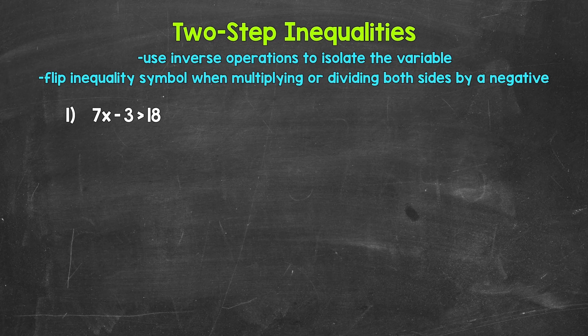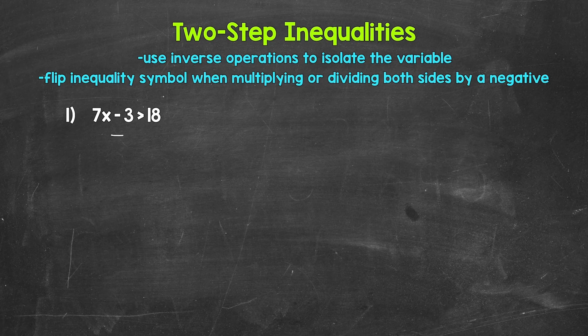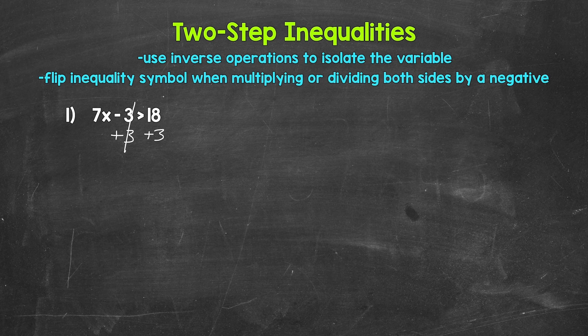Let's jump into number one, where we have 7x minus 3 is greater than 18. Just like with a two-step equation, we want to undo the subtraction first. We go in the reverse order of operations to undo the operations and isolate the variable. So we need to undo the subtraction first, and then the multiplication. The inverse operation of subtraction is addition, so add 3 to both sides. The 3s cancel on the left, giving us 7x is greater than 21.